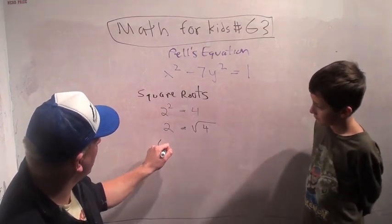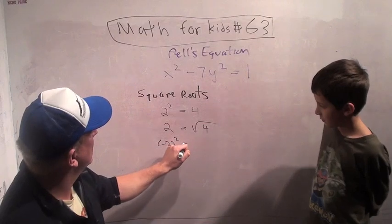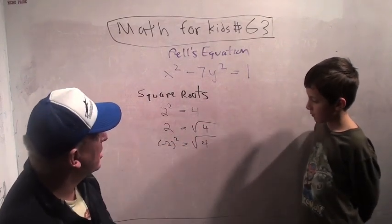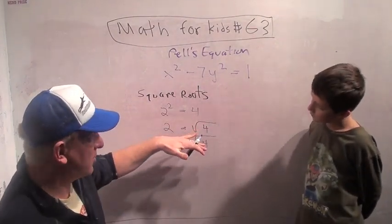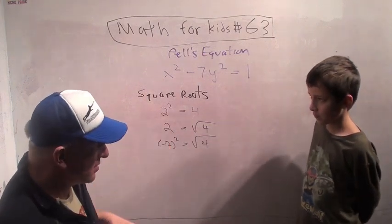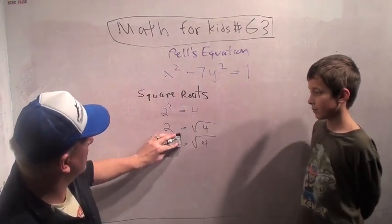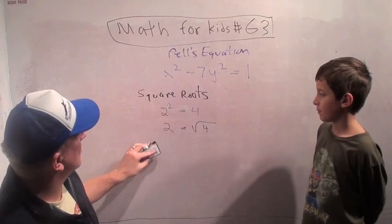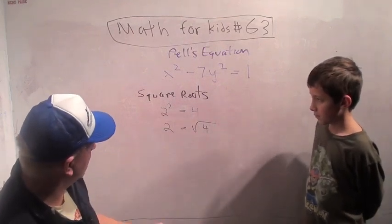Also, by the way, you remember that minus 2 times minus 2 is 4? So minus 2 is also the square root of 4. Usually when we talk about square roots, we only mean the positive ones, but sometimes you mean the negative ones.